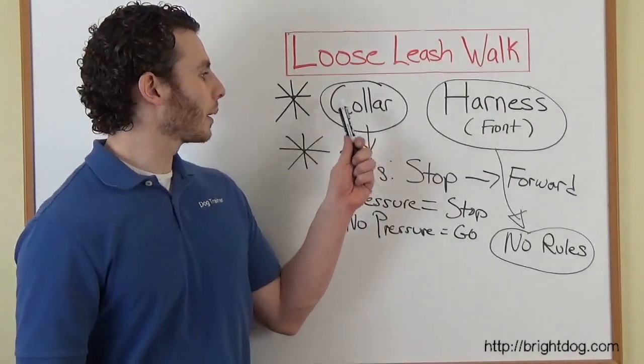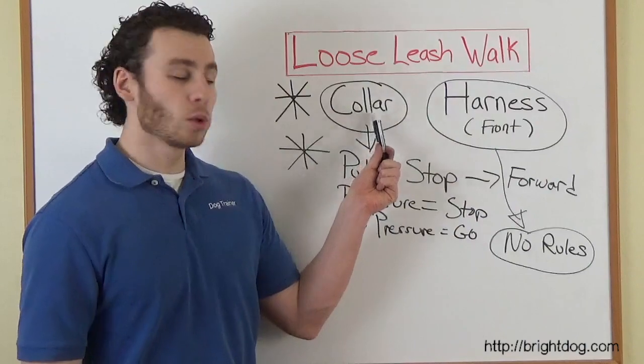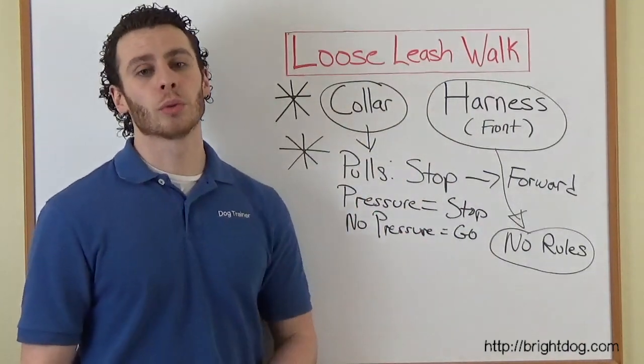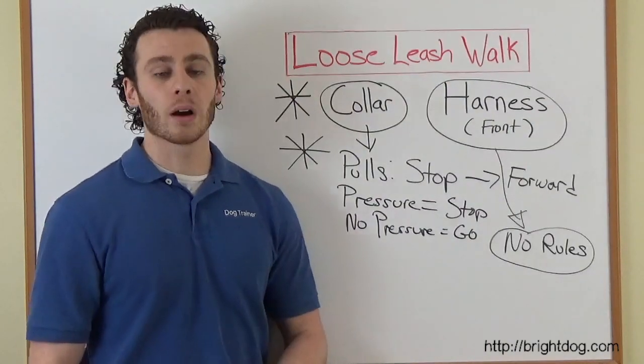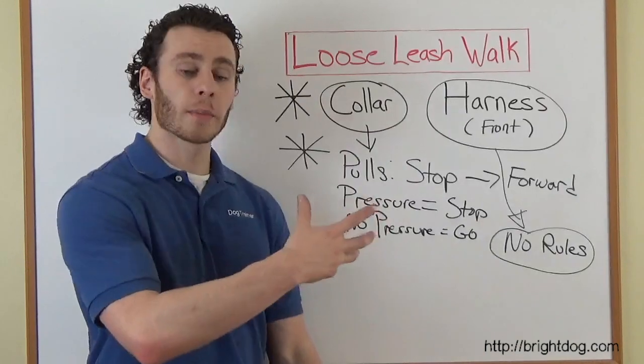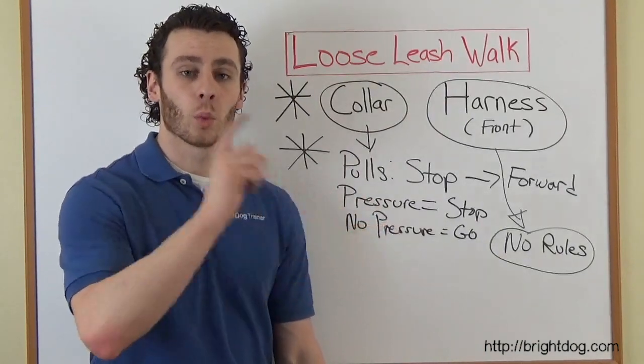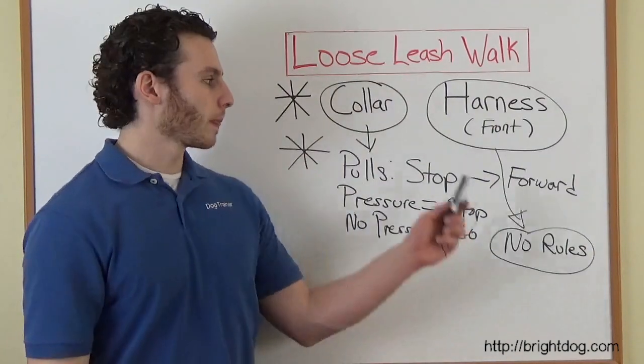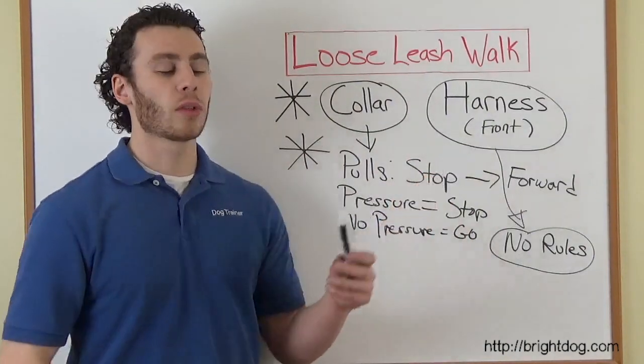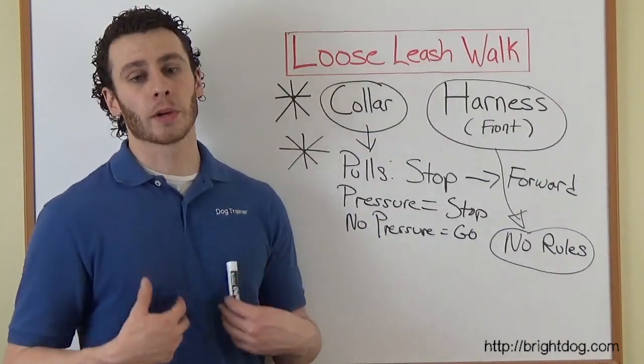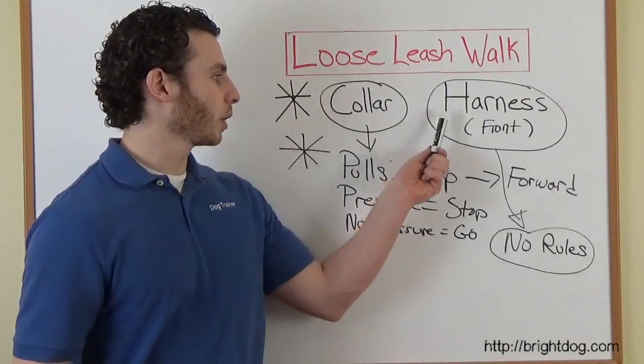But absolutely critical that we have both things. Because if you have him on the collar and he pulls and you don't stop, you've just ruined about a hundred stops. The hundred stop and goes you did, the one time that you go forward when he pulls, 100 repetitions are now ruined. So that's why it's so critical that if you think you're going to be in a situation where you're not going to be able to stop and go, we have to put him on the harness.